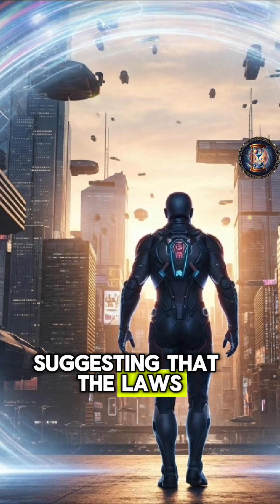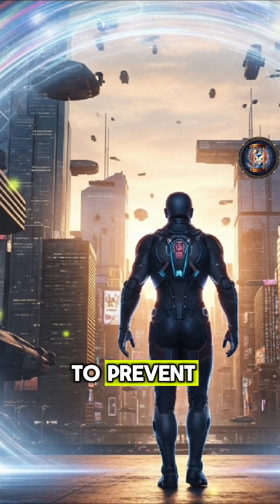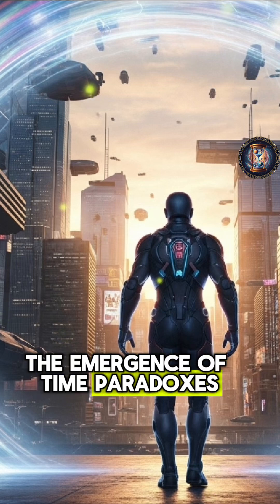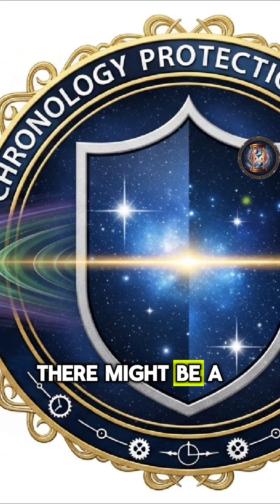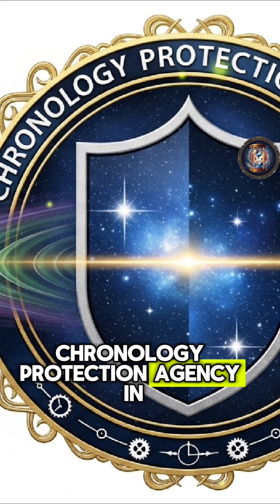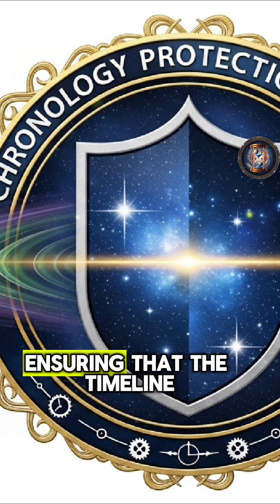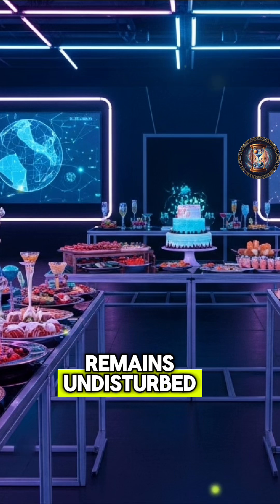suggesting that the laws of physics might conspire to prevent the emergence of time paradoxes. In other words, there might be a chronology protection agency in the universe, ensuring that the timeline remains undisturbed.